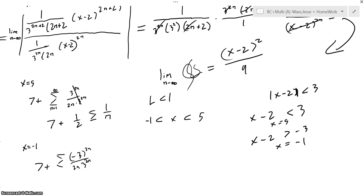The story is, again, similar with x equals negative 1, which, again, simplifies to the exact same thing. 7 plus 1 half, the summation of 1 over n, which diverges. So, we can confirm that our limits, or our interval of convergence, is negative 1 to 5. The end.